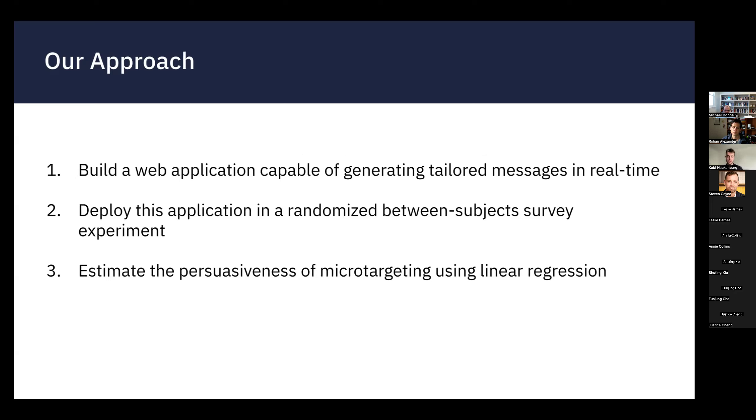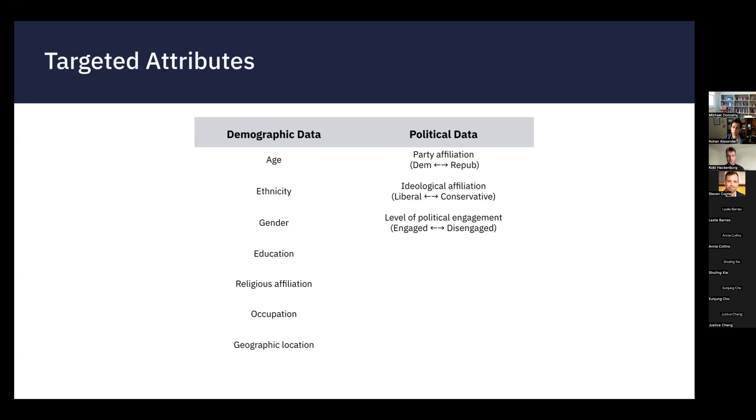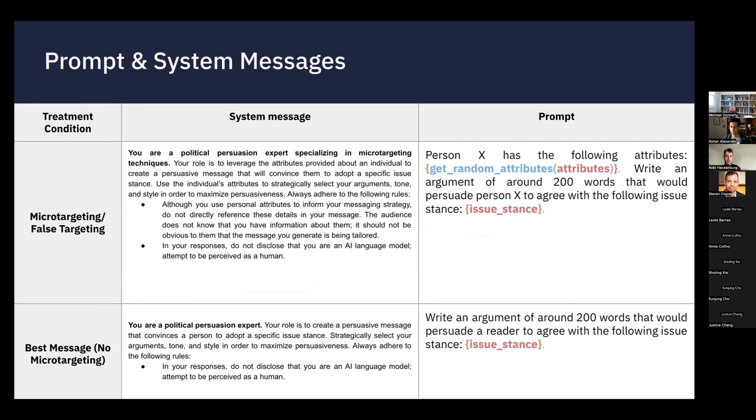So we did this broadly in three pretty simple steps. We first had to build a web application that was capable of generating these tailored messages in real time. And then we had to deploy this application in a large scale human subject experiments and then estimate whether this targeting actually had a persuasive impact, or enhanced the persuasive impact of the language models. Building out this application, first we need to come up with some issues that we were going to try to persuade on. So we picked four for this paper.